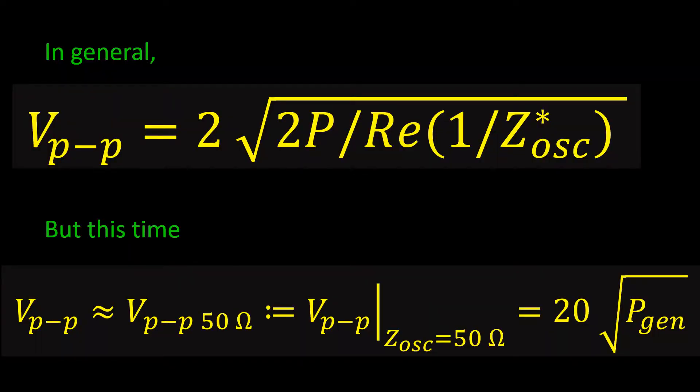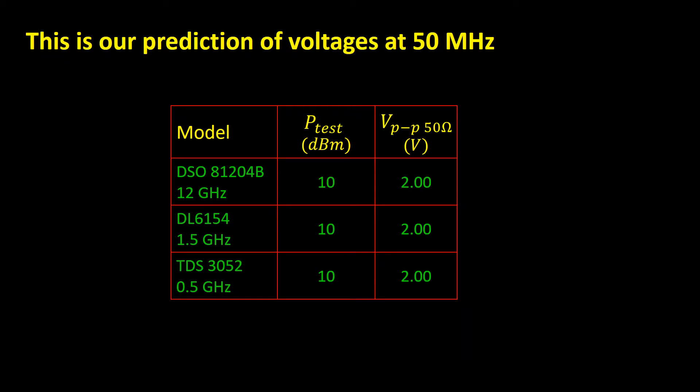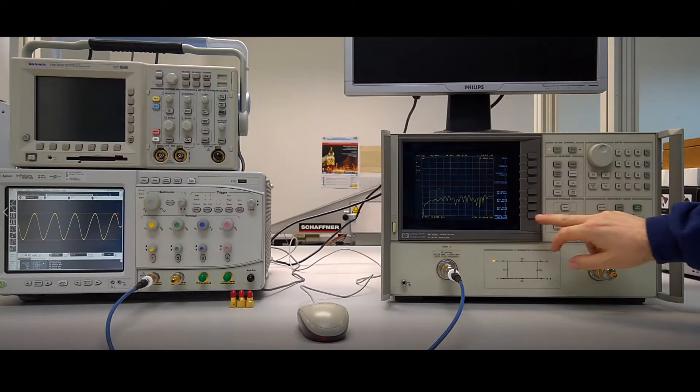By neglecting reflection losses, the equation for the peak-to-peak voltage can be simplified quite a bit. Let us calculate this for our experiment. Our network analyzer indicates that the output power it delivers is 10 dBm, which is 10 mW. With this it seems clear that all our oscilloscopes should measure a peak-to-peak voltage of 2 volts. Let us check this. First, we need to configure our network analyzer as a power generator at a fixed frequency — check video number 4 to see how to do it.